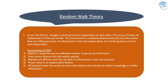Assumption number two: stock prices discount all information quickly. Whatever information enters the market, stock prices absorb it very quickly. For example, if ABC stock was trending at 800 rupees and the news of a fire breakdown came in, the market absorbs it quickly and the price starts falling from 800 to 700, 600, and 500.